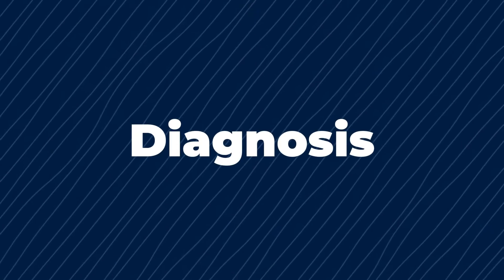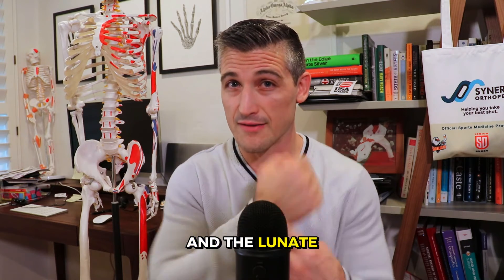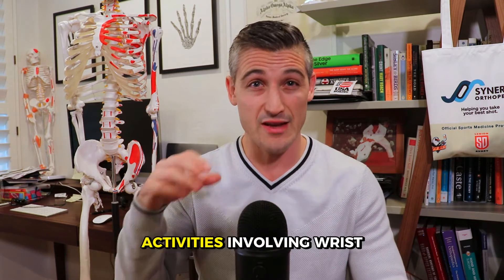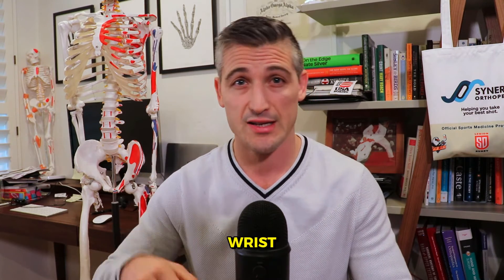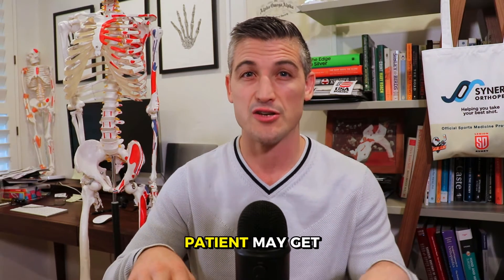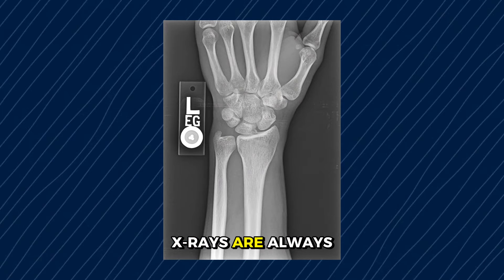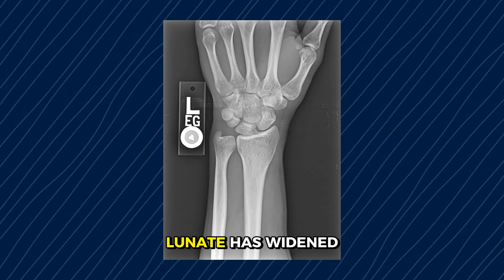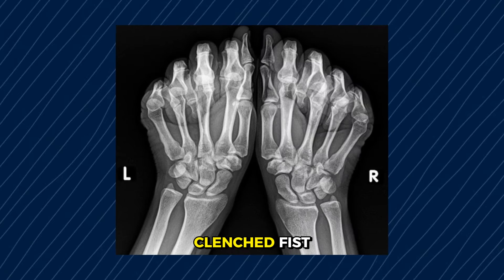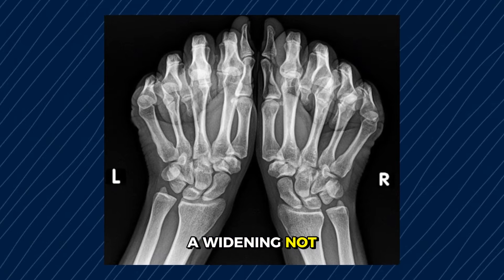The diagnosis. It all starts with an exam. There is usually pain between the scaphoid and the lunate, and often pain with activities involving wrist motion and loading. Initially there may be a lot of swelling. As things progress and swelling goes down, the patient may get clicking or popping of the wrist, and there is often stiffness. X-rays are always part of the evaluation — sometimes you can see the space between the scaphoid and lunate has widened, or the alignment of the carpal bones is off. A clenched fist, which loads the bones within the wrist, may show a widening not seen on normal x-rays.